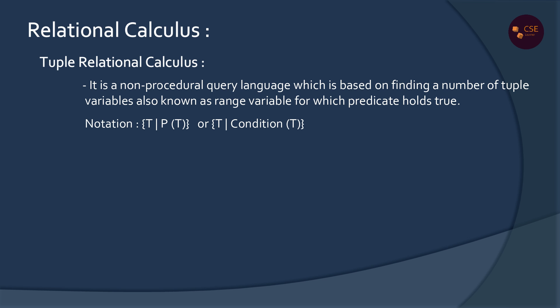Tuple Relational Calculus notation is written as: {T | P(T)}, where braces contain T, a vertical bar, and P(T). T is the result tuple, P(T) is the predicate or condition — using and, or, not — and we also use quantifiers in tuple relational calculus.